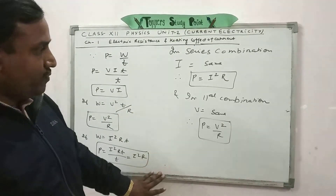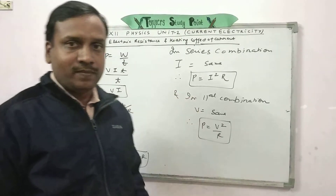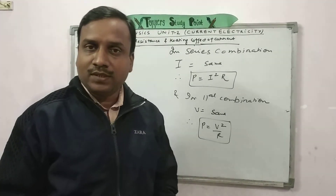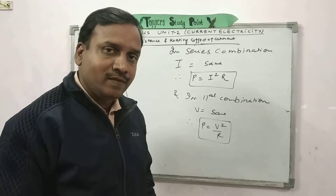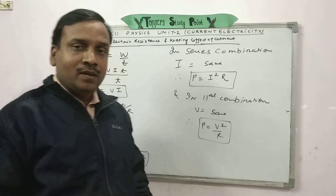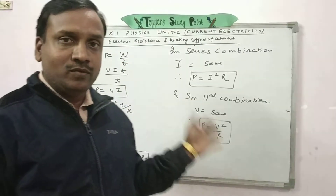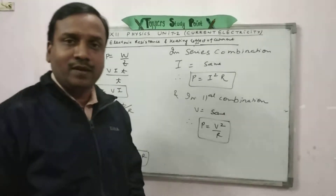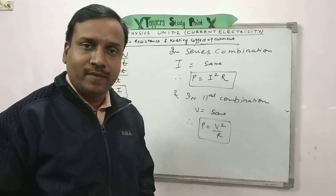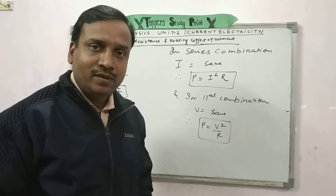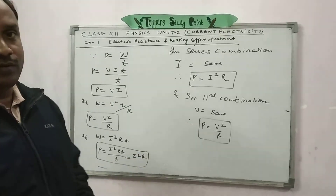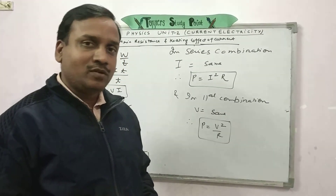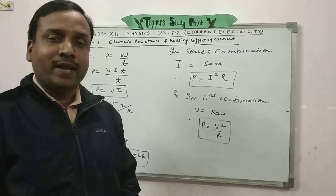These are all the formulas of chapter 1 in current electricity. In the next video we will discuss the formulas of DC circuit, which is another important chapter. Please try the numericals using these formulas. If you have any problem, leave it in the comment box. If you like this video, please like, subscribe, and share. Thank you.